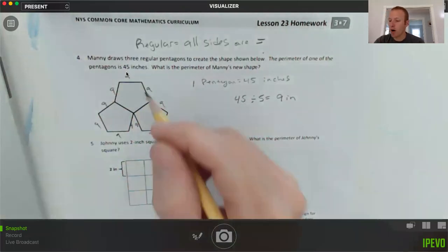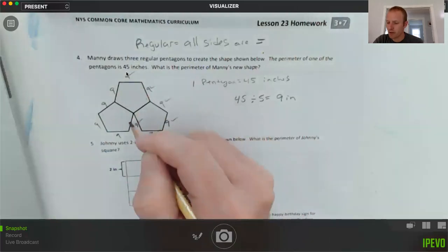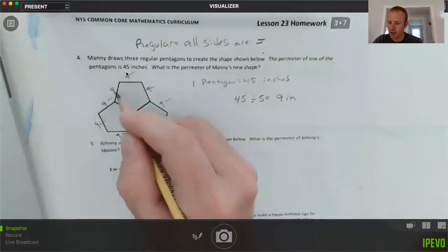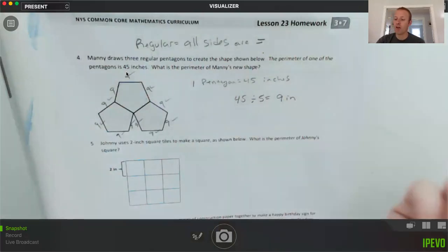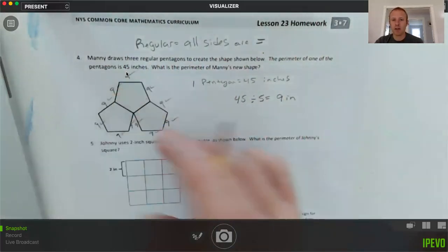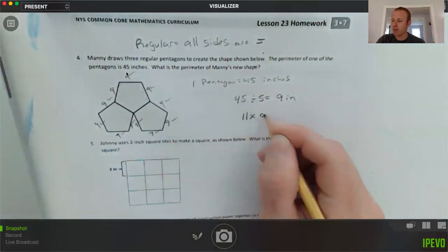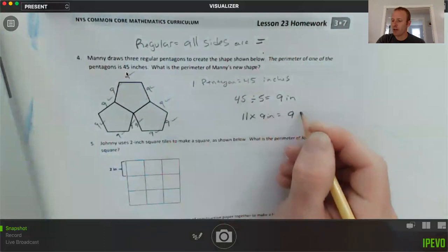So 45 inches divided by five sides is nine inches. So we can go around and just label them. And then we count up how many there are. So I'll start here: one, two, three, four, five, six, seven, eight, nine, 10, 11. I have 11 sides that are exposed to the outside, 11 exterior parts that I need to measure. So 11 times nine inches equals 99 inches.